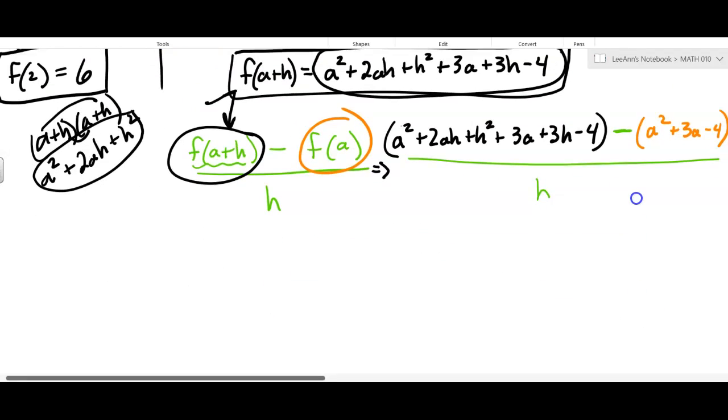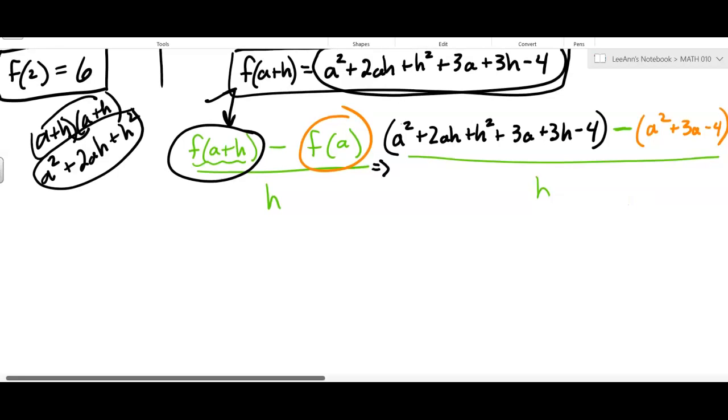Now we want to try to simplify it. So sometimes these are a little bit long, but they're way fun. You get A squared plus 2AH plus H squared plus 3A plus 3H minus 4. Now, we've got to distribute here. Minus A squared minus 3A plus 4.